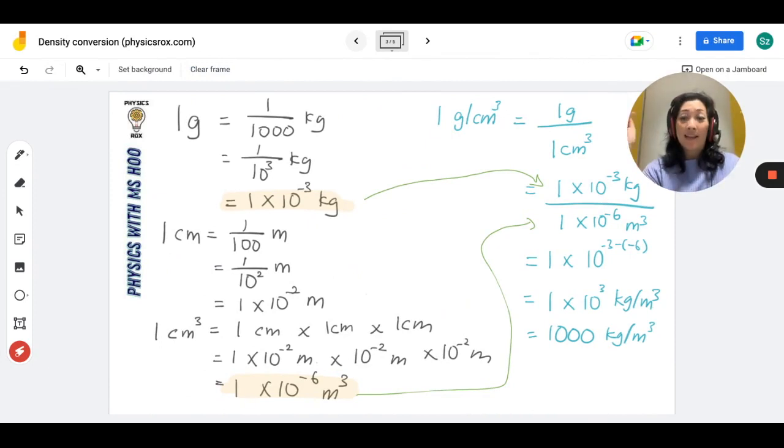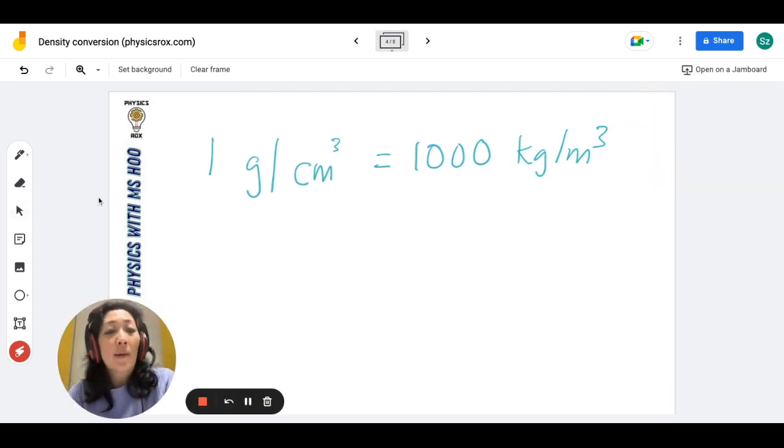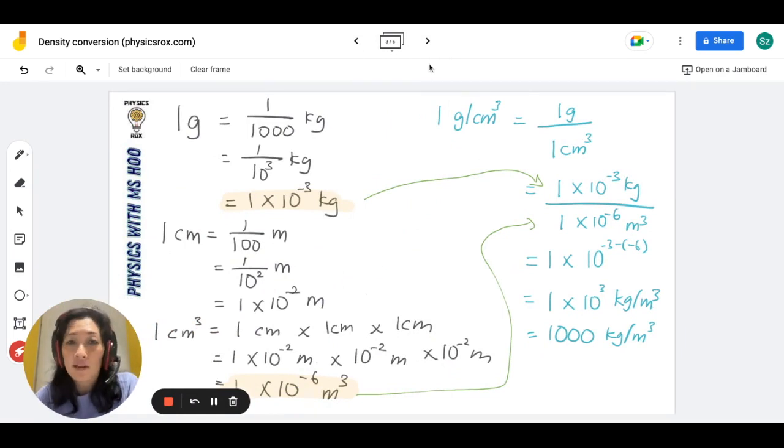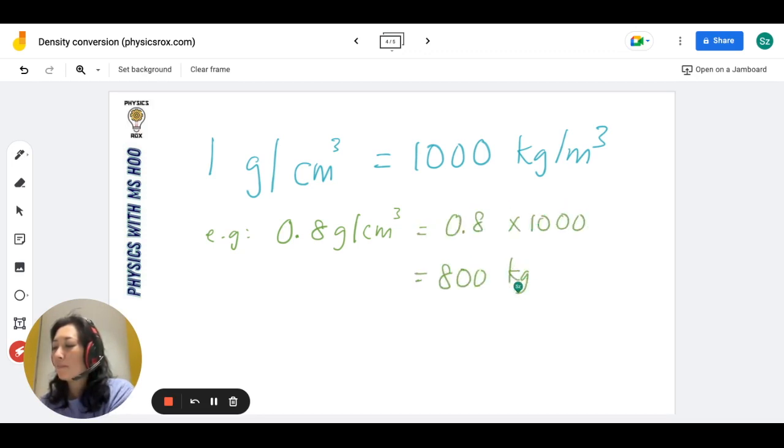And yes, this is why, this is why 1 gram per cm cube is equal to 1,000 kilograms per meter cube. So in the future, you can just memorize this. You don't have to prove this through this long-winded working, no need. They're not even going to give you marks for showing all this extended working, no. They just want to know, do you know that 1 gram per cm cube is equal to 1,000 kilograms per meter cube? So if you have other values expressed in gram per cm cube, and you need to convert it to kilogram per meter cube, all you need to do is multiply by 1000. So for example, if you are given a value of 0.8 grams per cm cube, you don't have to do that long-winded mathematical conversion to get the value. Just take this number, multiply it by 1,000, and you would get that value in kilogram per meter cube.